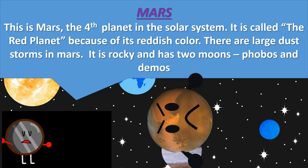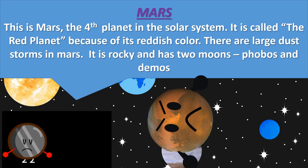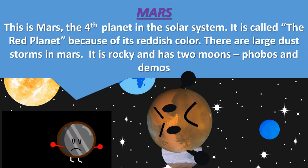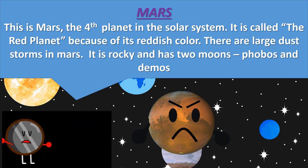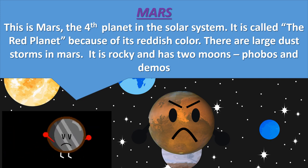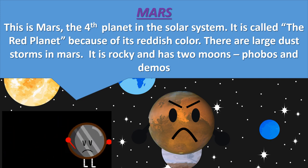Mars. This is Mars, the fourth planet in the solar system. It is called the Red Planet because of its reddish colour. There are large dust storms on Mars. It is rocky and has two moons.